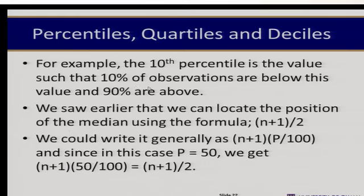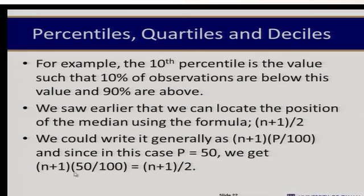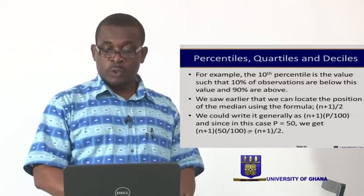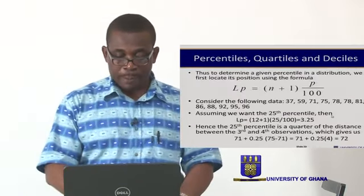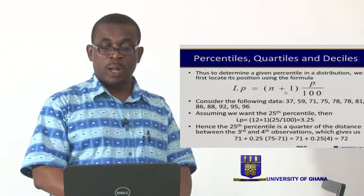To locate the position of a percentile, we apply the formula: position = (n + 1) × p / 100. This generalizes the median formula — since the median is the 50th percentile, substituting p = 50 gives (n + 1) × 50/100 = (n + 1)/2, which is exactly the median position formula. This general formula locates the position of any desired percentile.